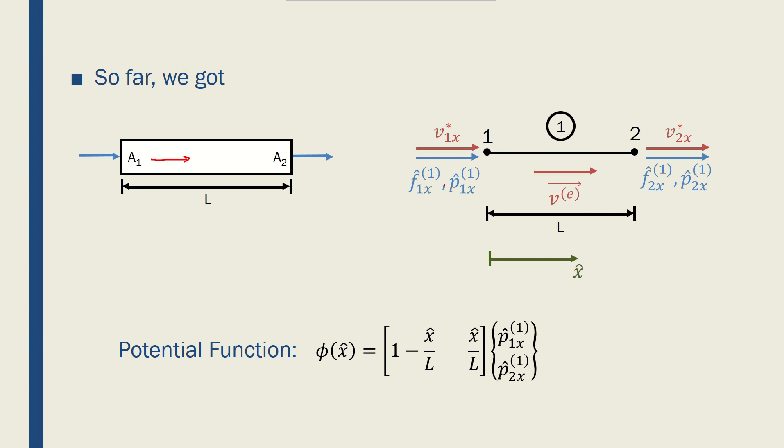We discretized a problem or an element and drew its free body diagrams, the fluid flow rate and potential per element or per node, the velocity per element, and the velocities at each node, and we also found the potential function for the element to relate, to give us the potential at each location along the length of the pipe.